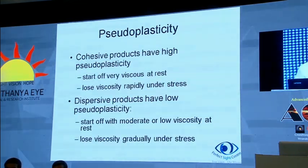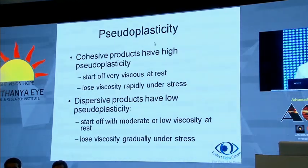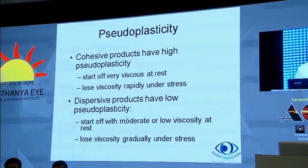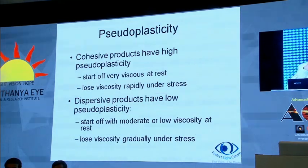Cohesive products have high pseudoplasticity — they start off very viscous at rest but lose viscosity rapidly when stress is applied. Dispersive products, on the other hand, have low pseudoplasticity — they start off with moderate or low viscosity at rest but lose viscosity gradually under stress. Even with HPMC or Viscoat, you may notice that you have to apply more pressure once it starts moving.